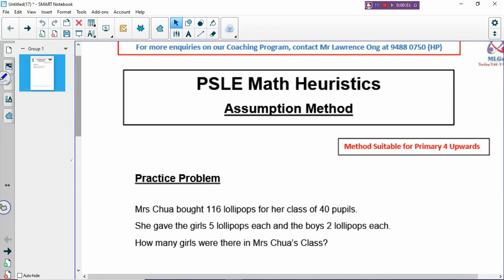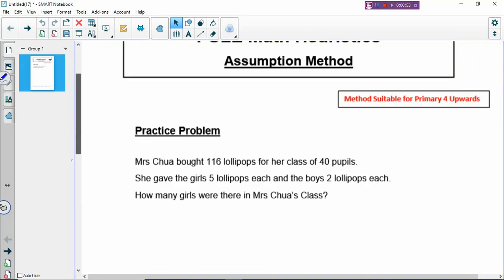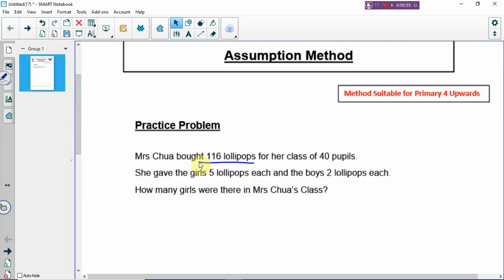Mrs. Chua bought 116 lollipops for her class of 40 pupils. To do Assumption, there is a very important number that you must have, which is the total number of pupils. Without this total number, you cannot do Assumption. She gave the girls 5 lollipops each and the boys 2 lollipops each. How many girls were there in Mrs. Chua's class?